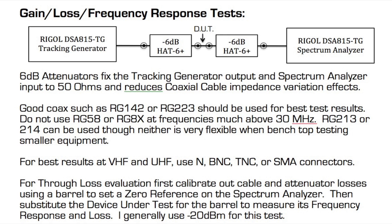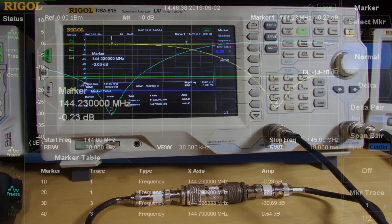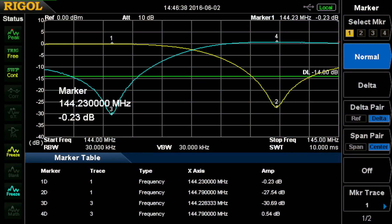For through-loss evaluation, first calibrate out the cable and attenuator losses using a barrel in place of the device under test. Zero reference on the spectrum analyzer, and that'll be your reference for everything else. You can use normalization on the spectrum analyzer as well. Then substitute the device under test for the barrel and measure its frequency response and loss. I usually use minus 20 dBm for this test, and I'll show you why later. Once you've normalized the spectrum analyzer, you should have a line that goes straight across zero. When you substitute the device under test, you should see its response curve, which in this case at 144.230 has about 0.23 dB of loss — that's the yellow line.